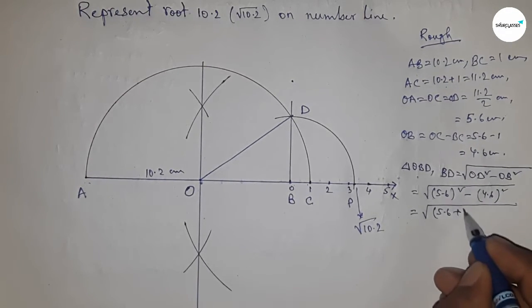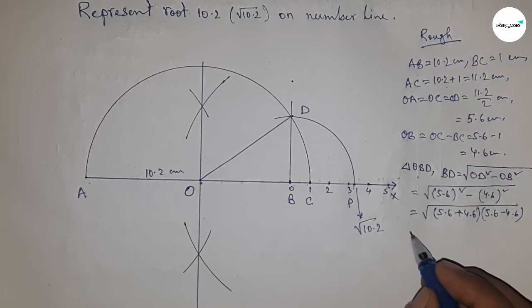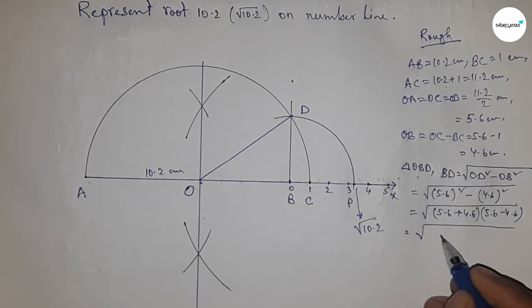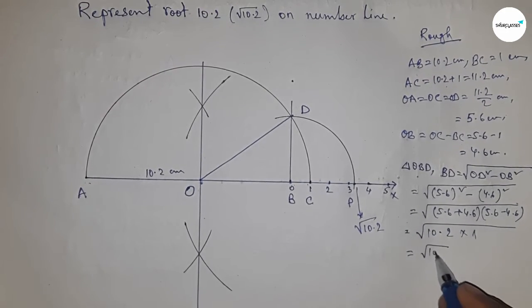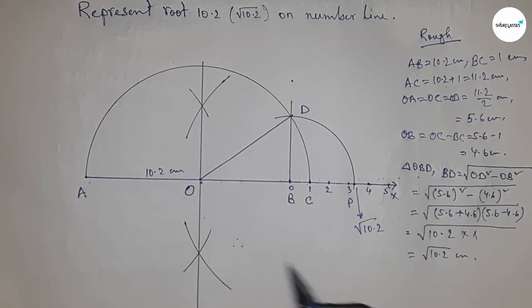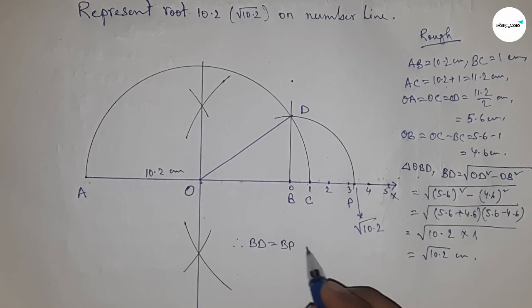Using the formula a squared minus b squared equals (a plus b) times (a minus b), we get 10.2 times 1, which is root 10.2 centimeters. Therefore, distance BD and BP are equal to root 10.2 centimeters.